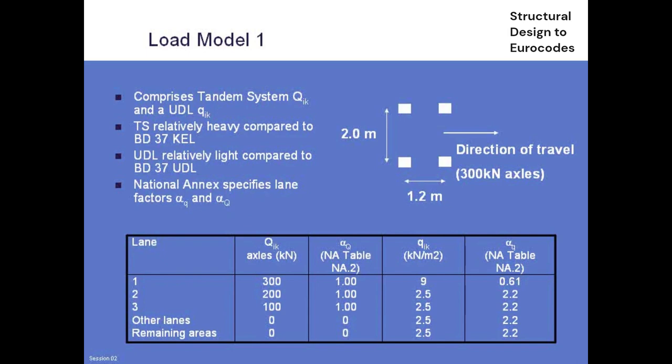That's not arbitrary — it's been done with calibration in mind. Calibrating load model 1 against HA loading for a wide range of spans, deck widths, and lane widths, the loading generally comes out within plus or minus 10% of what it used to. In many ways that's quite convenient because it's actually a lot easier to put this loading on than the old HA loading, which required working through influence lines and loaded lengths.